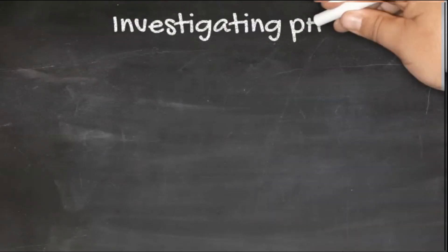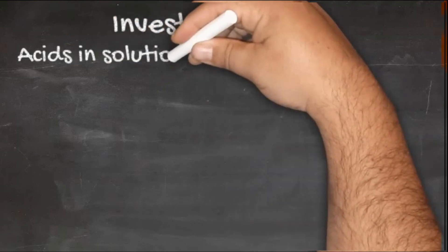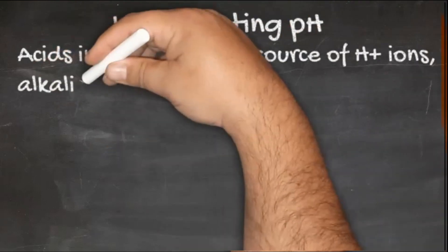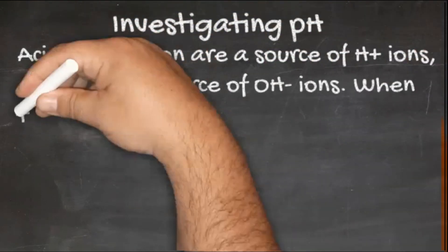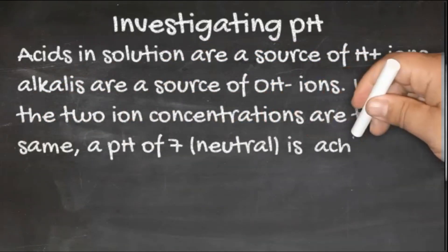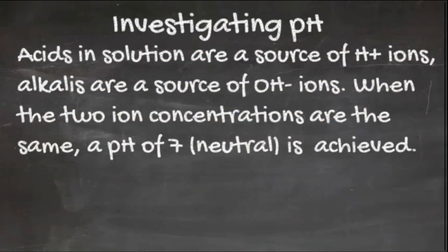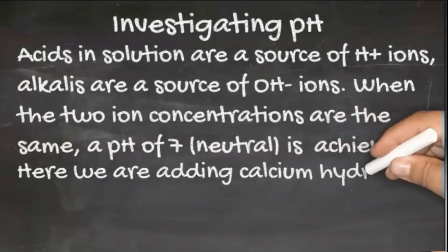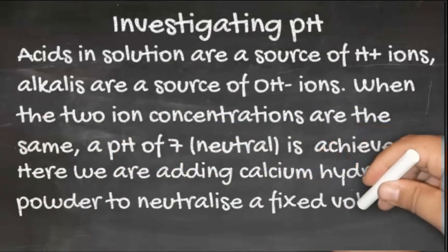Acids in solution are a source of hydrogen H plus ions. Alkalis are a source of hydroxide OH minus ions. When the two ion concentrations are the same, a neutral pH of 7 is achieved.